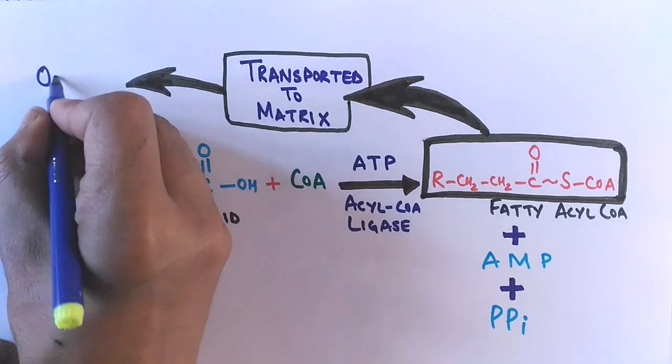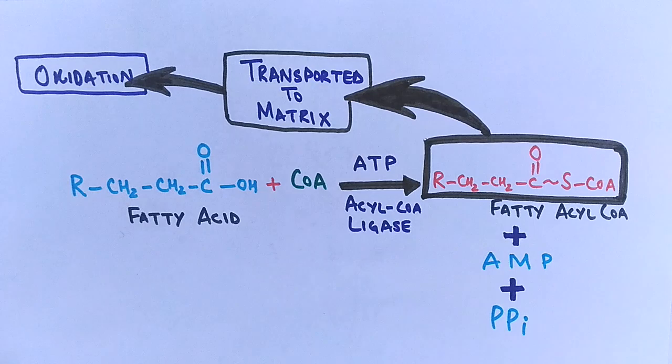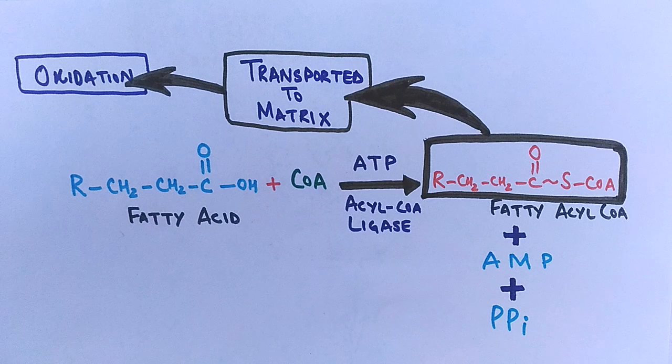And after that, when the fatty acids are activated and are present in the matrix of mitochondria, there occurs oxidation which is called beta oxidation of saturated fatty acids.